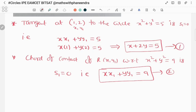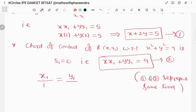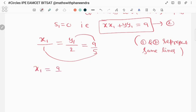Equation 1 and equation 2 representing same lines. So their x coefficients, x1 coefficient in equation 2, x coefficient is x1. Here x coefficient is 1. Since 1 and 2 represent same lines, y coefficient in second equation is y1, their coefficient is 2, and 9 here constant, here 5. So equating these two, x1 = 9/5 and y1 is 18/5.